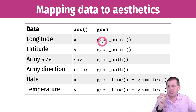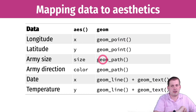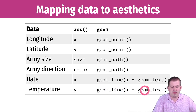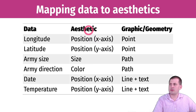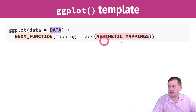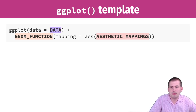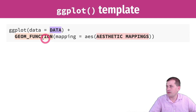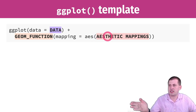Then you plot these things with specific geometries. If you want points on the graph showing where the cities are, you use geom_point. If you want a path connecting all the places where the army is going and changing width depending on army size, you use geom_path. To show temperature over time you have geom_line, and to put actual text you have geom_text. The conceptual mapping of aesthetics and geometry maps very directly to the actual code when using ggplot.